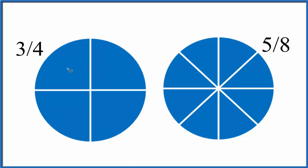3 fourths, that would be three of these pieces. So we have 1, 2, 3, 4, and 3 fourths would be three of the pieces. 5 eighths, this is divided into eight pieces.